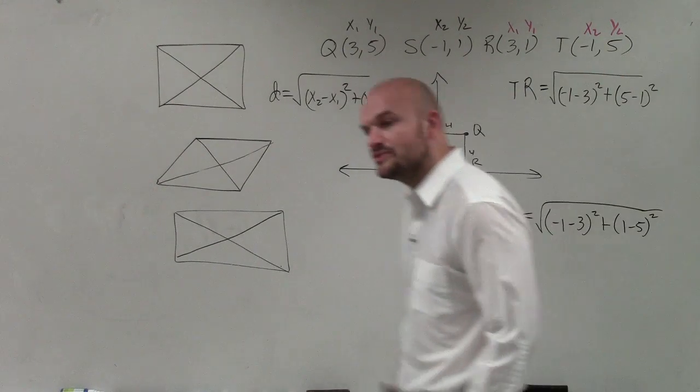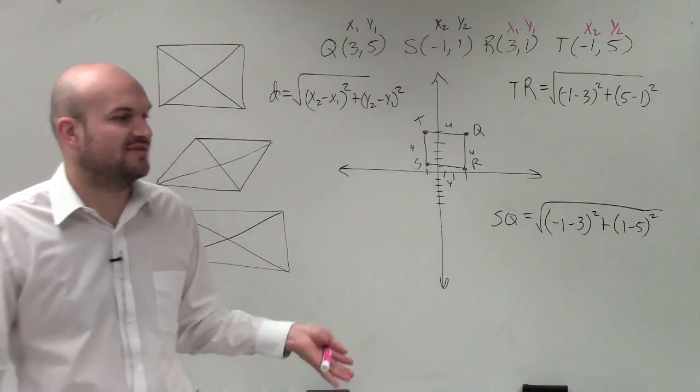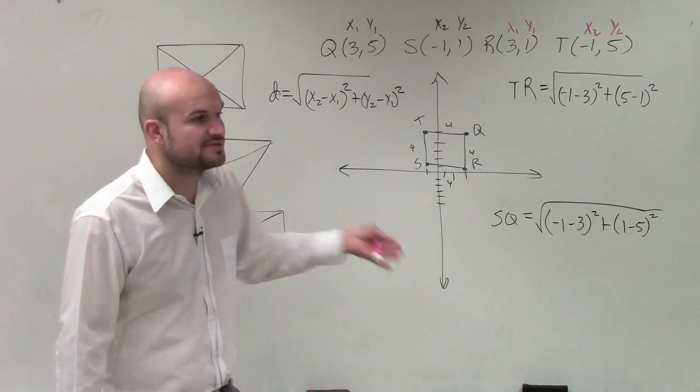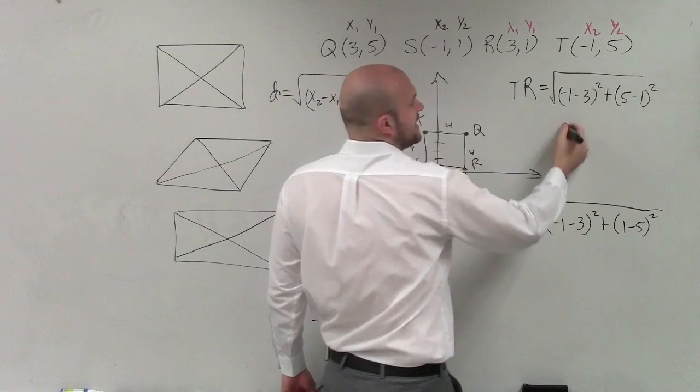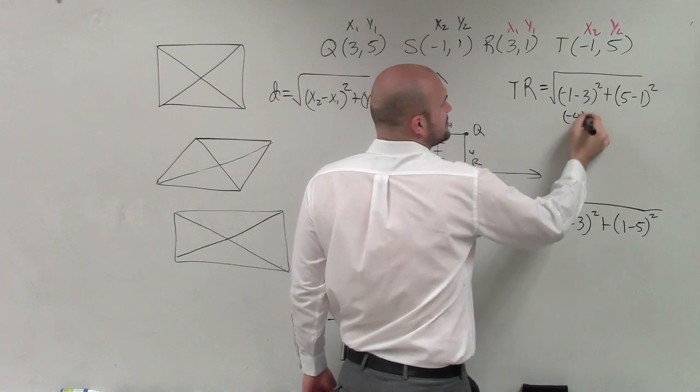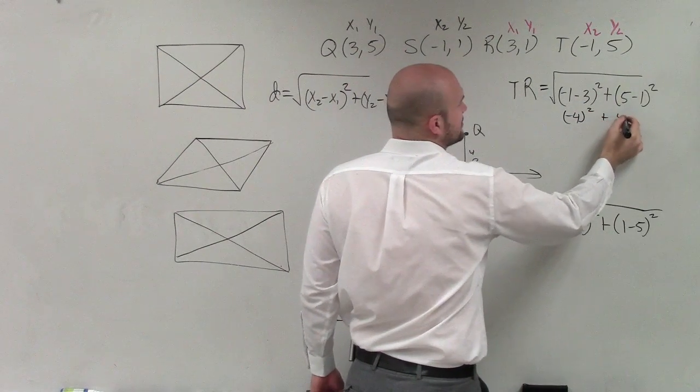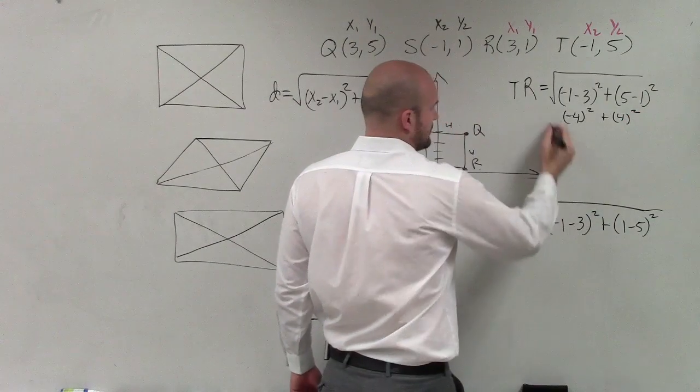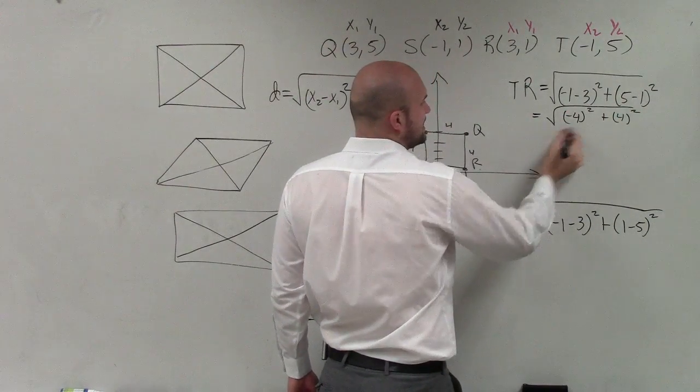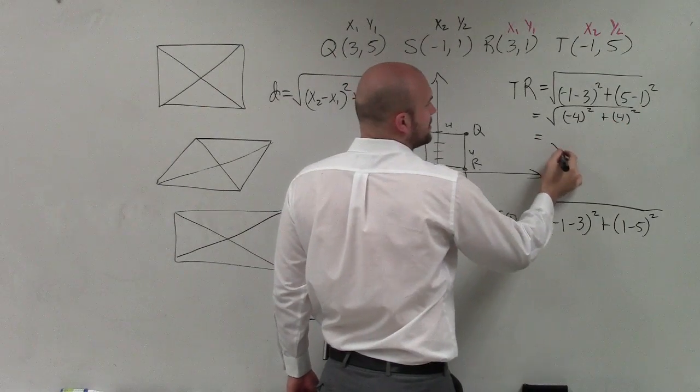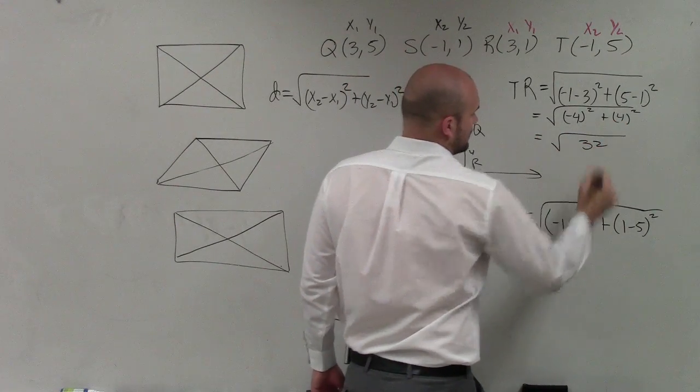OK, now we can just go and simplify. And again, we don't need to find the exact value, we don't need to approximate. We just want to make sure that they're exactly the same. OK, so negative 1 minus 3 is negative 4, so I have negative 4 squared. 5 minus 4 is 1, plus 1 squared. 4 squared is 16, plus 1 is the square root of 17—no wait. 5 minus 5 is 0, plus 4 squared. 4 squared is 16, plus 16 is the square root of 32. Yes?